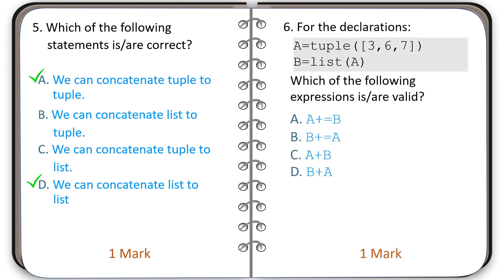Question number six: declarations are given and you have to identify which of the given expressions are valid based on these declarations. There is only one valid expression, and that is given in option B.